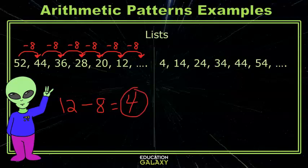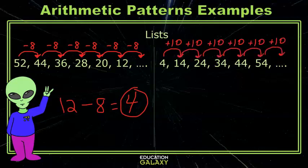In this next list, 4, 14, 24, 34, 44, 54, each term is increasing by 10. If we continue this pattern, we would get 54 plus 10, which equals 64.